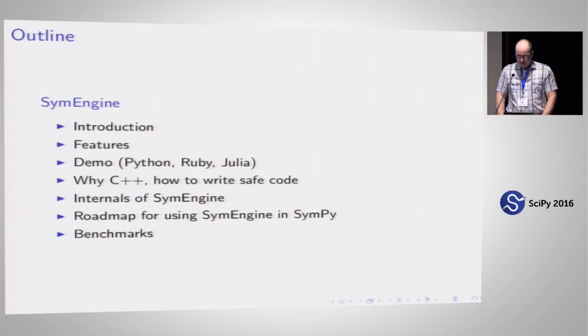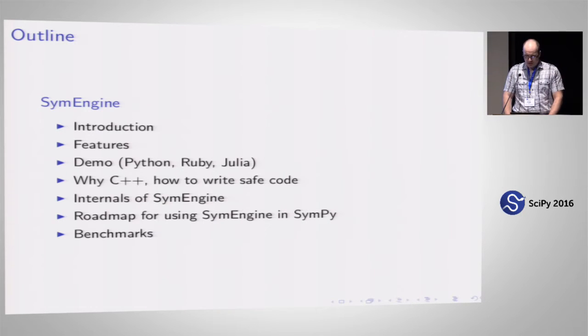I'll give the first part of the talk and then Isru will show you some benchmarks. SymEngine is a fast symbolic manipulation library in C++. After an introduction, I'll talk about the features of what SymEngine can do, and then we'll show you a demo with Jupyter notebooks in Python, Ruby, and Julia.